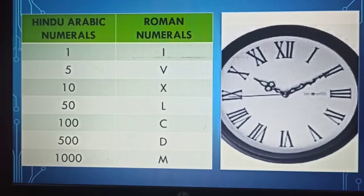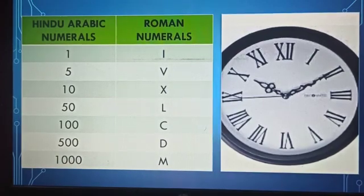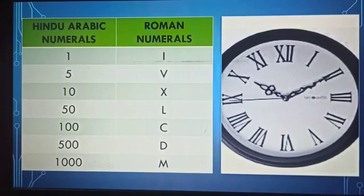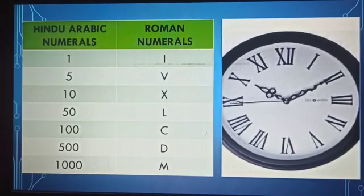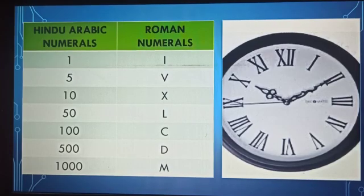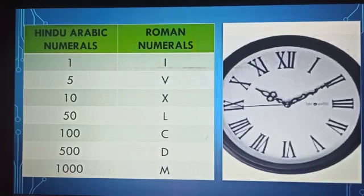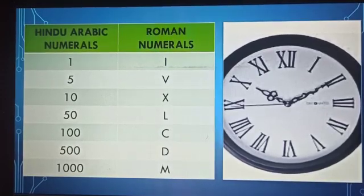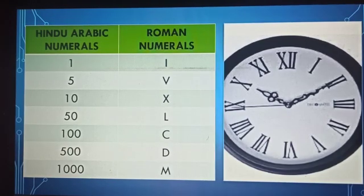Students, look at this table. In this table, in the first column, numerals are written in Hindu-Arabic numerals and in the second column, numerals are written according to Roman numerals. According to this table: 1 is represented by I, 5 is represented by V, 10 is represented by X, 50 is represented by L, 100 is represented by C, 500 is represented by D, and 1000 is represented by M.